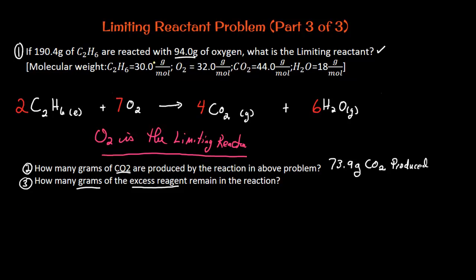In the first video, we were given C2H6 — the ethane molecule — reacting with molecular oxygen, diatomic oxygen. We determined the limiting reactant was the oxygen. In the next video, we determined the mass of carbon dioxide produced to be 73.9 grams. In this last portion, we need to determine the mass of the excess reagent that remains in the reaction.